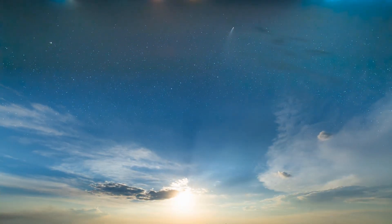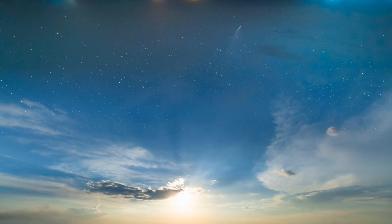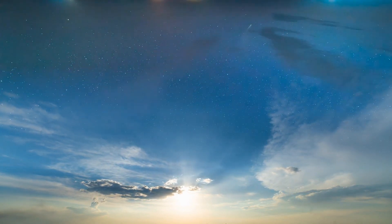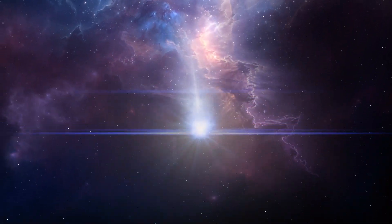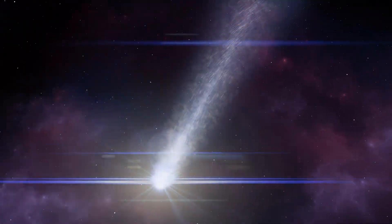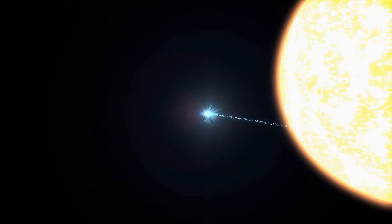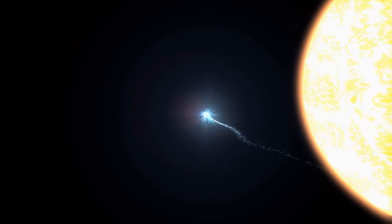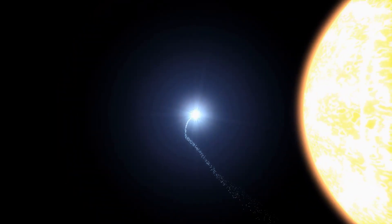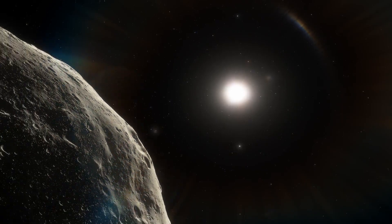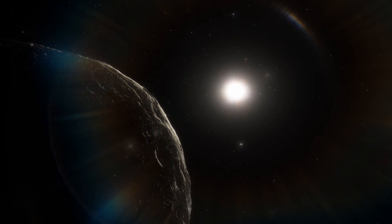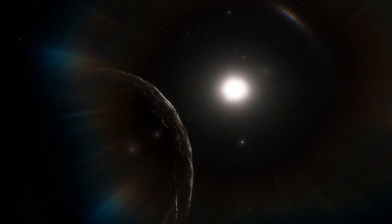The comet's luminosity is then further enhanced by another effect that astronomers call forward scattering. This effect occurs when the comet is illuminated from behind by the Sun. As Tsuchinshan-ATLAS turns its back on the Sun and heads towards the Earth, the Sun's rays will hit the back of the comet. The dust and ice crystals will reflect the light and scatter it towards the observers, that is, towards us.